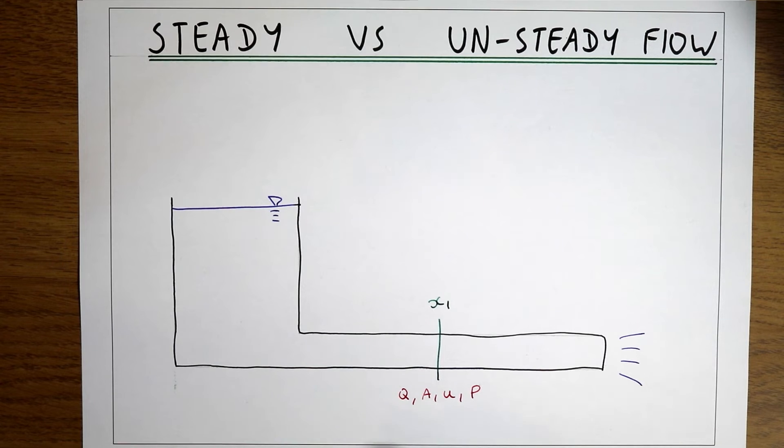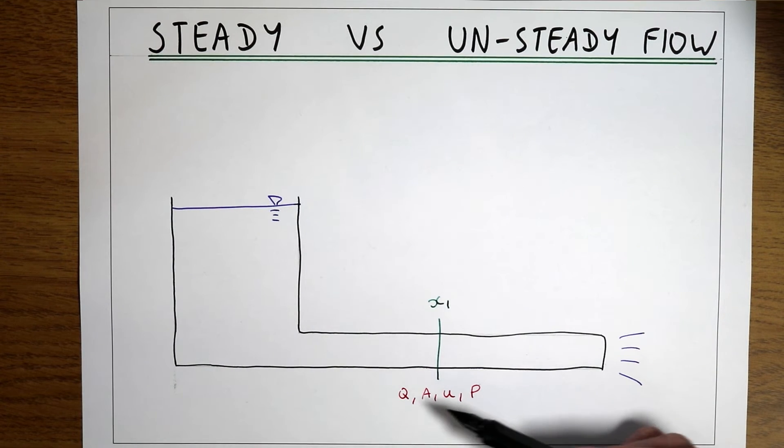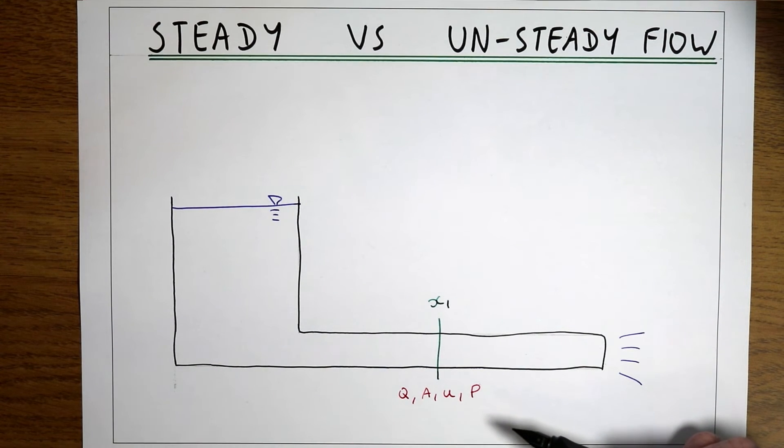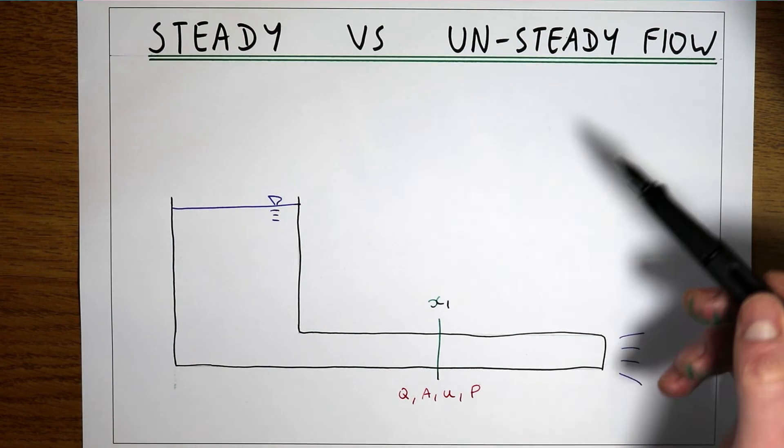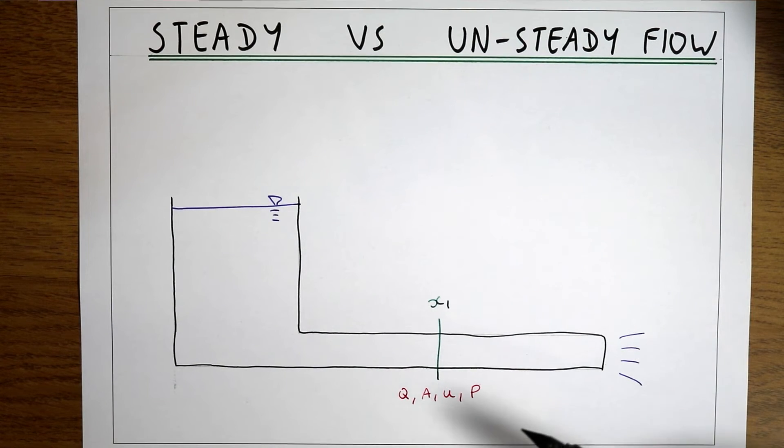If we measure these parameters and start a stopwatch and as time goes on these parameters change, then the flow is unsteady because the flow parameters are changing as time goes on. If the parameters are the same with time then it's steady, if they're changing as time goes on then the flow is unsteady.